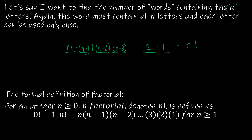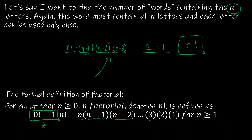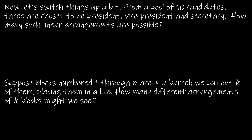That product is called n factorial. Factorial is the right tool when you're using all n of the letters. Let's look at the formal definition: for an integer n ≥ 0, n factorial (written n!) is defined as: 0! = 1 — we'll discuss that more shortly — and for n ≥ 1, n! = n × (n−1) × (n−2) × ... × 3 × 2 × 1.